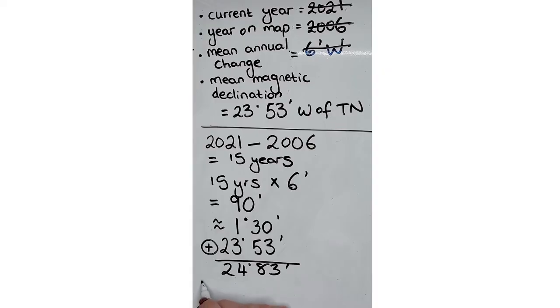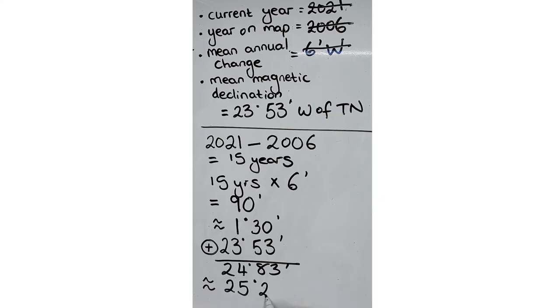So it is going to become 25 degrees. We've used up 60 minutes to create this new degree, but we still have some minutes left over — 23 minutes left over. So your final answer is 25 degrees and 23 minutes west of true north.